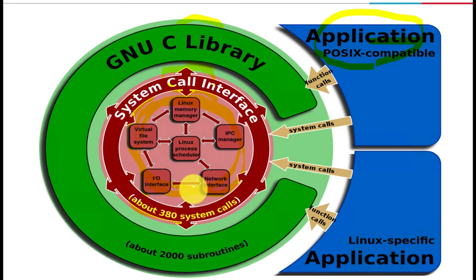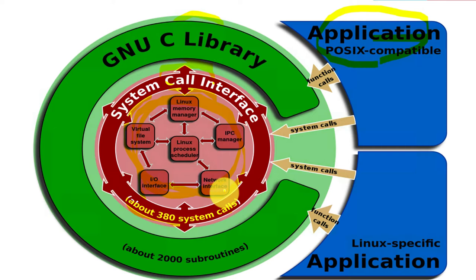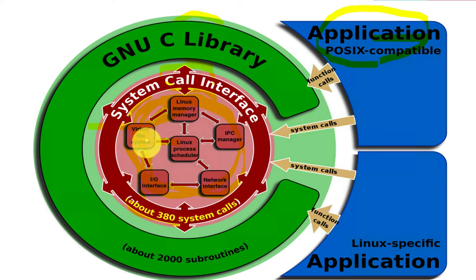Let's see the core kernel. The kernel has several blocks: Linux memory manager, IPC manager, Linux process scheduler, virtual file system, IO interface, network interface, and so on. They are all connected and communicated with each other. For example, virtual file system communicates with Linux memory manager, Linux process scheduler, IO interface, and also with the system call interface.